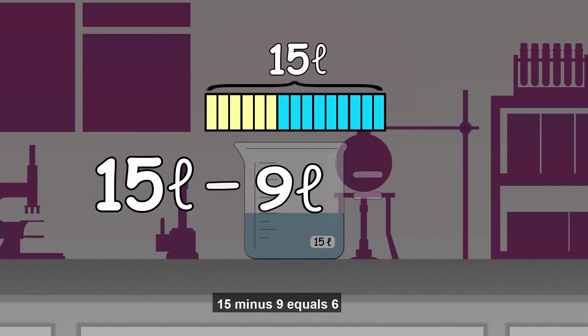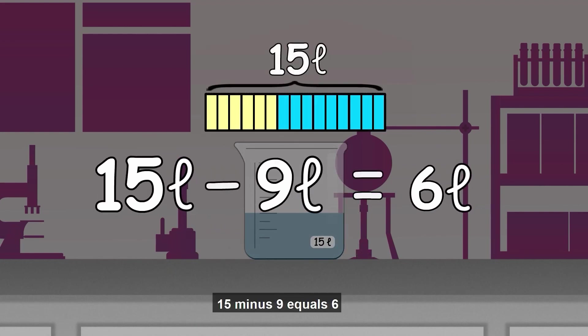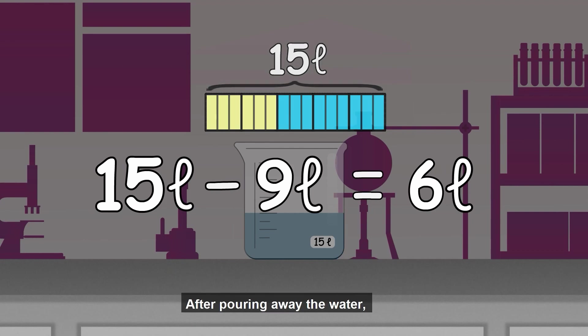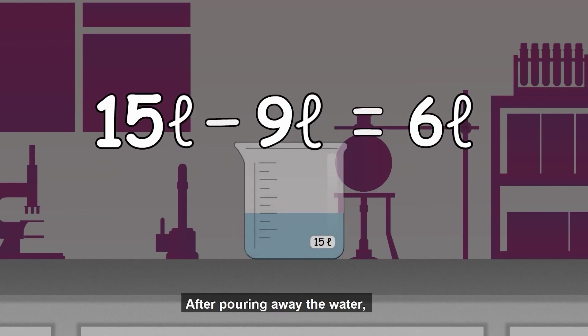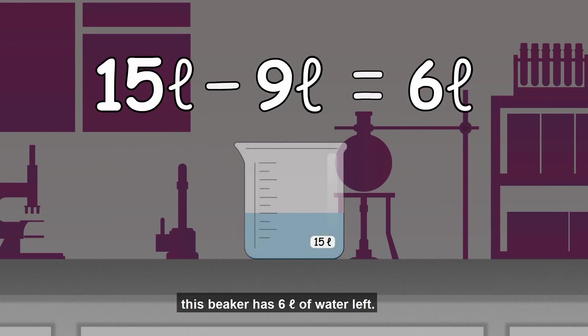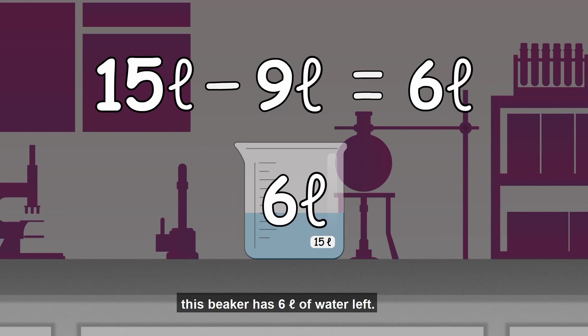15 minus 9 equals 6. After pouring away the water, this beaker has 6 liters of water left. Just right!